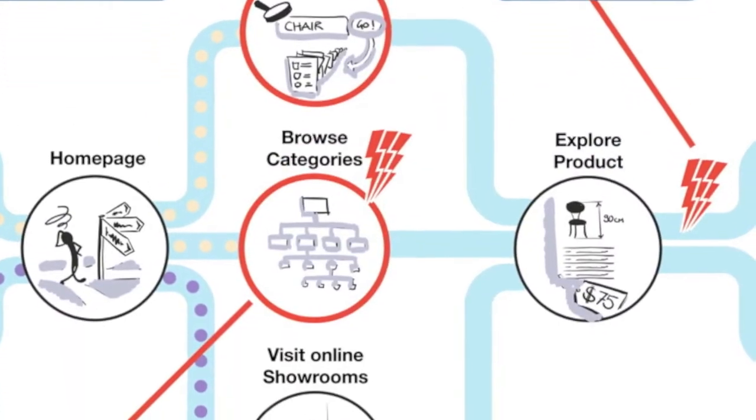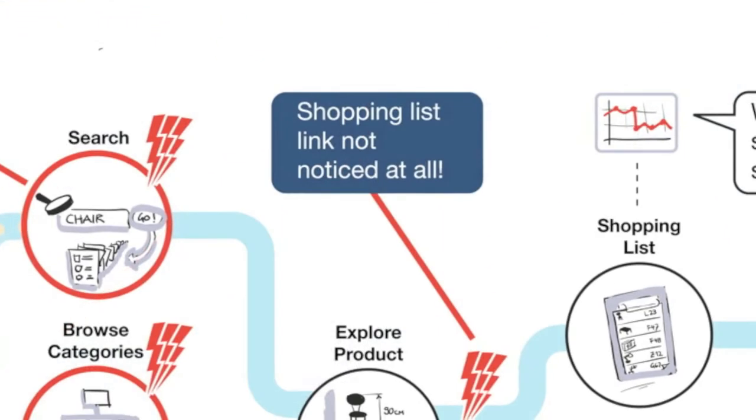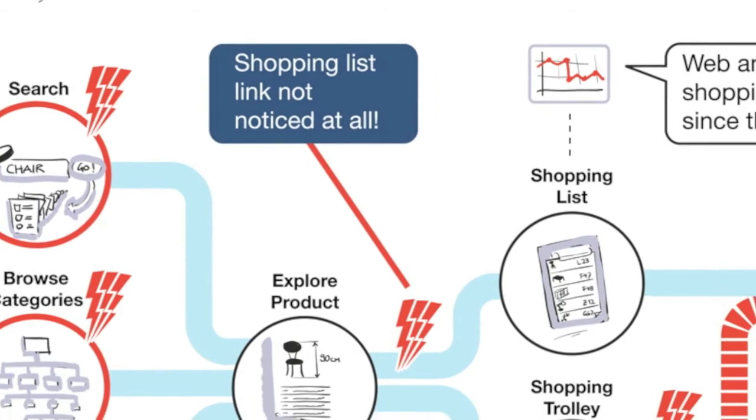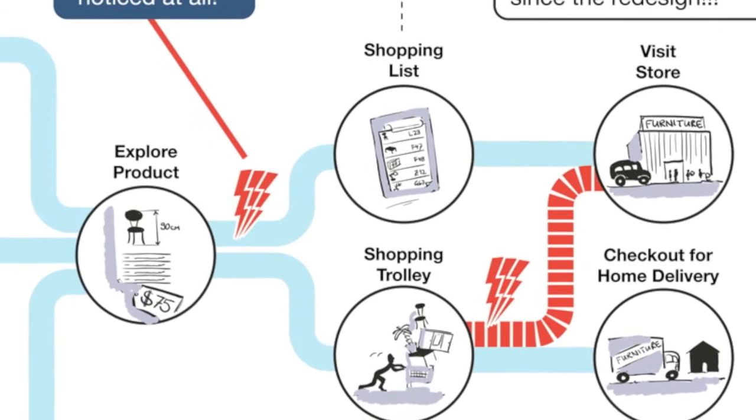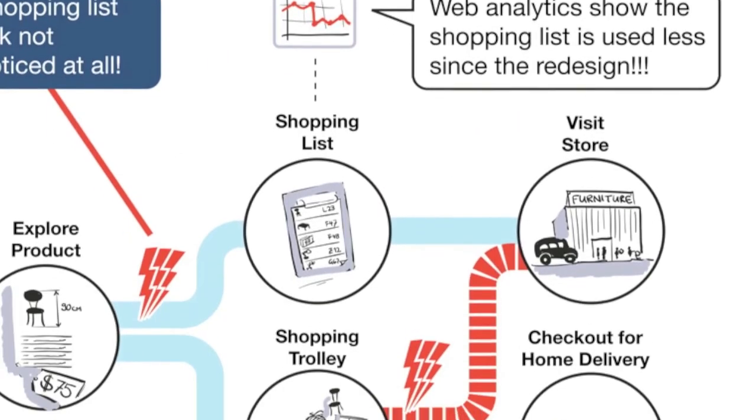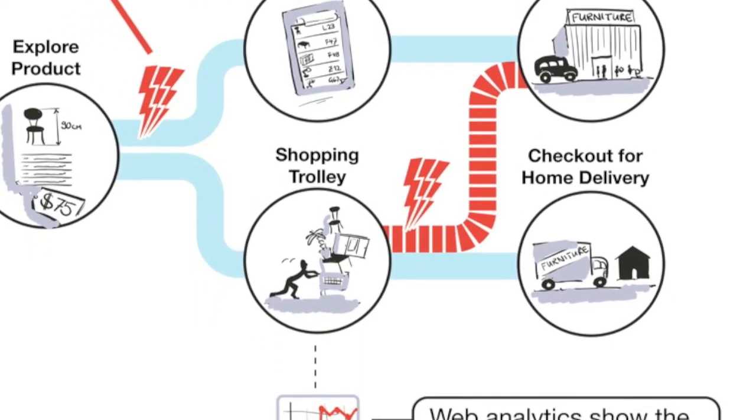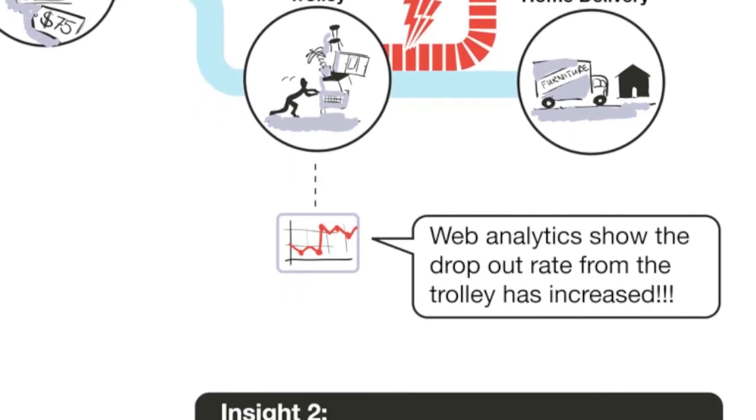It shows where the main issues and barriers are. It shows how the online experience is linked to visits to the offline store and why it's not quite working as expected. If we have analytics data, we can also lay some of that information over the top of this.